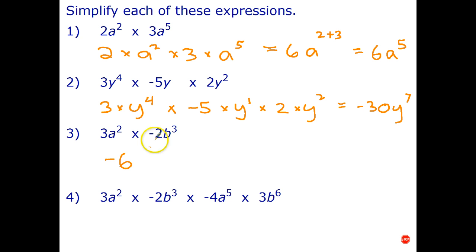Well our index law only applies if the bases are the same. So in this case I can multiply the coefficients but I can't simplify the powers. So that's the simplest way we can write three a squared times negative two b cubed. Index law number one only works if the bases are the same.